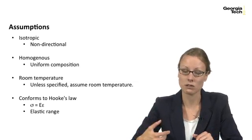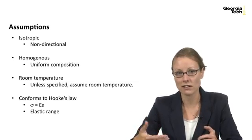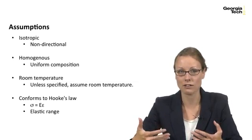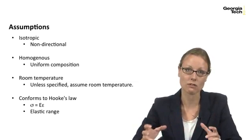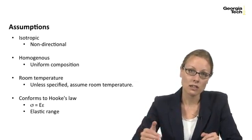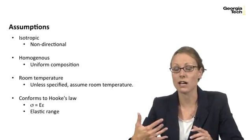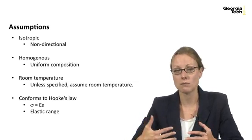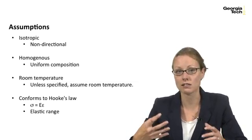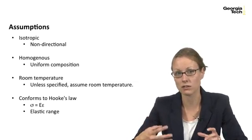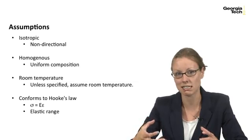We're also going to assume that we're dealing with homogeneous materials that have a uniform composition. So again, steel is a great example of this. It's iron that's been alloyed with carbon atoms and it's uniform throughout the steel. Unless otherwise specified in this course, you can assume that the design is occurring at room temperature. Primarily in this course we'll be looking at analysis that is valid for the elastic range, which means that it's conforming to Hooke's law where stress σ is equal to your modulus of elasticity E times strain ε.